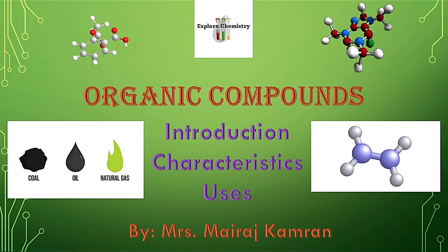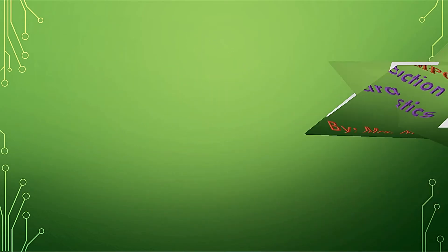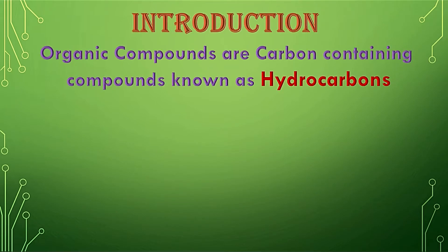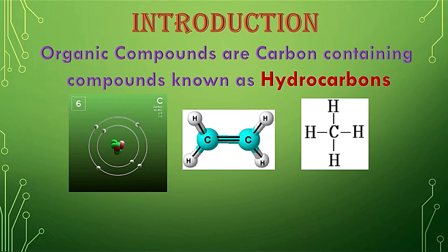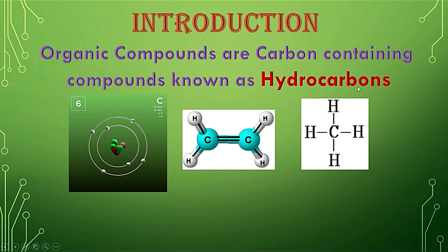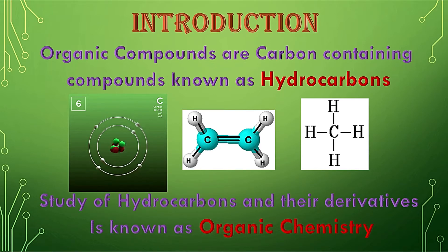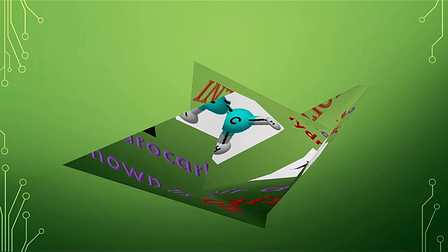Let's start. First of all, I will give you an introduction of organic compounds. Organic compounds are actually carbon-containing compounds known as hydrocarbons. They are compounds made up of hydrogen and carbon. As the name indicates, hydrocarbons means something made up of hydrogen and carbon, so hydrogen and carbon are the main elements of organic compounds.